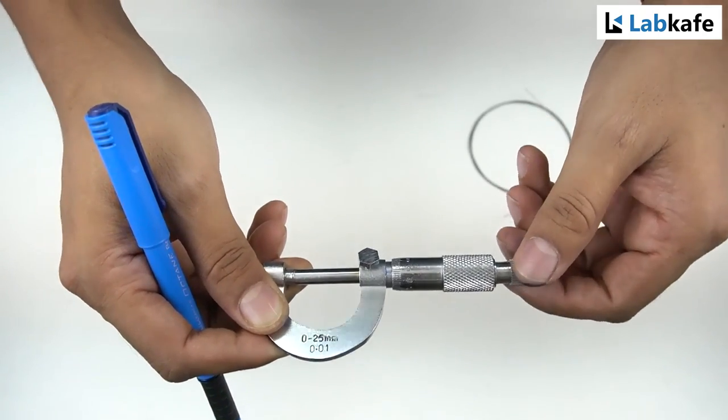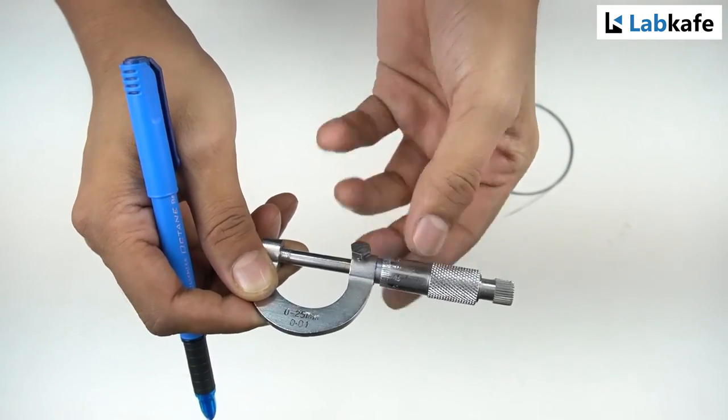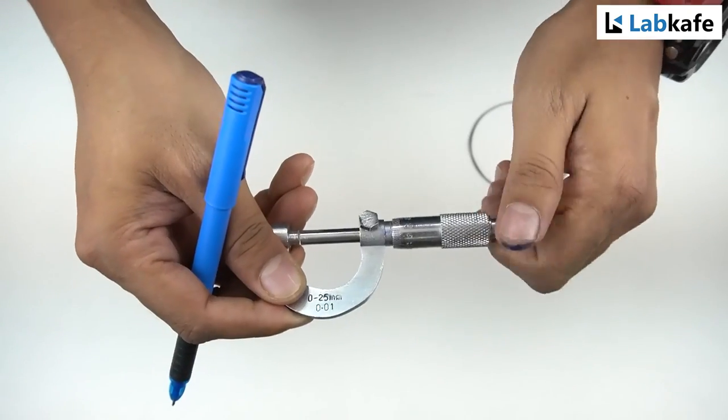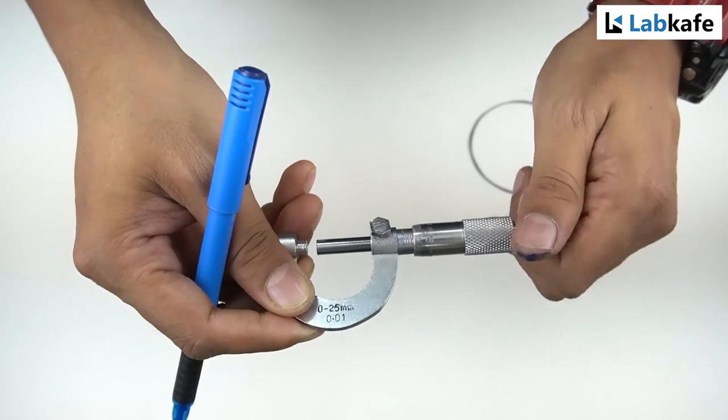Now, our screw gauge has no zero error. The zero of the circular scale is coinciding with the reference line. So what is the least count? To do so, first we need to find the pitch of the screw gauge.